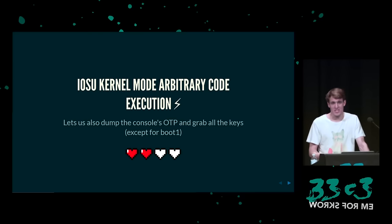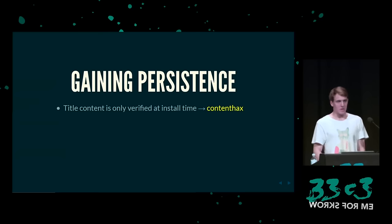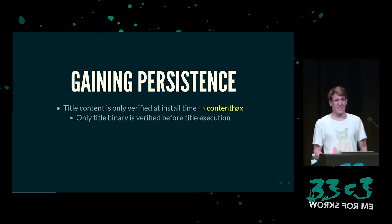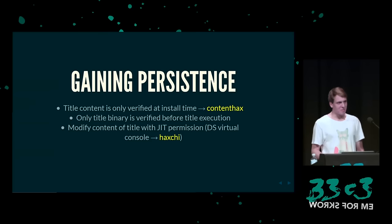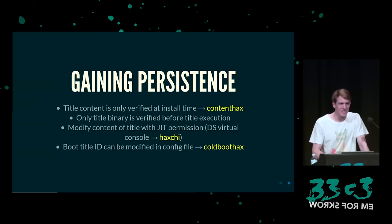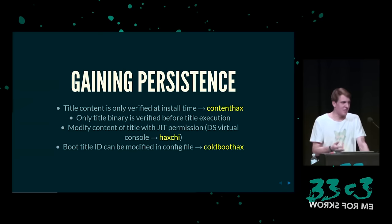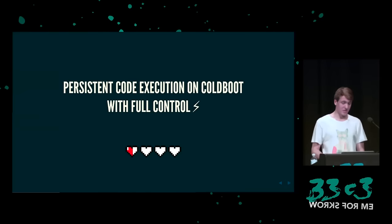Das enthält alle Schlüssel außer dem Boot-Einschlüssel, den schauen wir uns später an. Diese Schlüssel sind leider ausgeschlossen. Jetzt wollen wir Sachen persistent machen. Der Inhalt ist nur während der Installation verifiziert, aber nicht während des Bootens. Nur das Binary wird kurz vor der Ausführung verifiziert. Wir überschreiben quasi den ROM für ein DS-Spiel, exploiten damit den Emulator und bekommen wieder Code-Execution. Wir können die Title-ID überschreiben, sodass die Konsole direkt in das Spiel bootet. Das gibt uns Persistent-Code-Execution beim Cold-Boot mit kompletter Kontrolle über die Konsole.